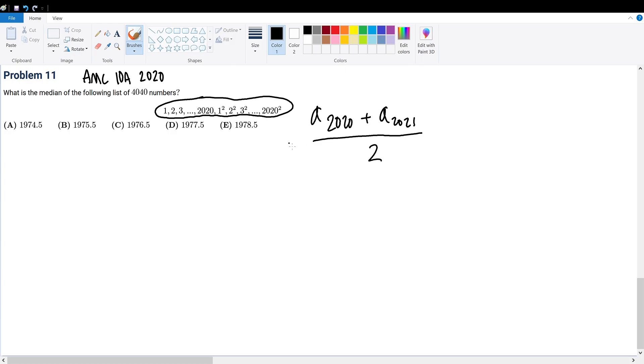So obviously, this is the median number. But is there some way that we can educately guess towards 2020? Well first, let's think about perfect squares. And why do you need to think about perfect squares? Because we have a sequence that involves perfect squares.